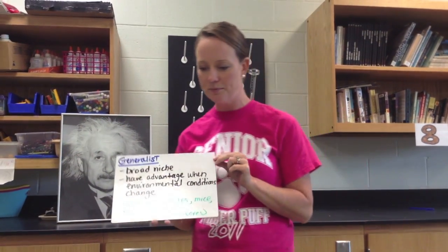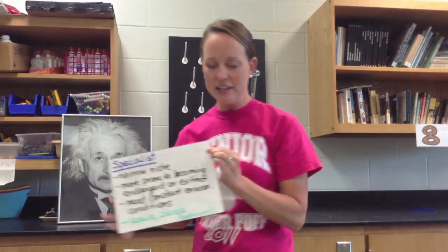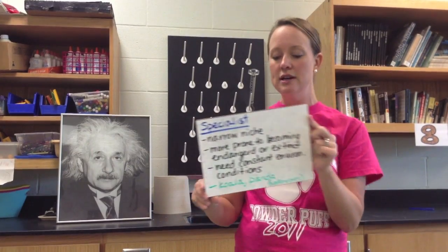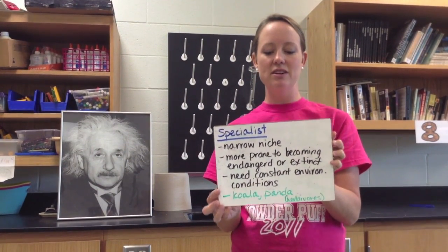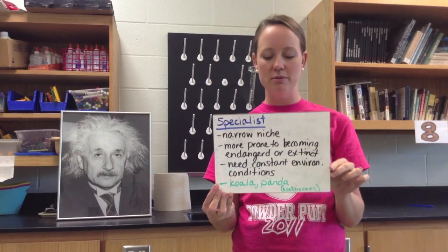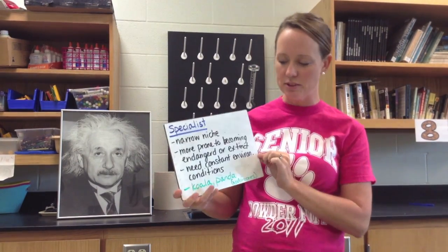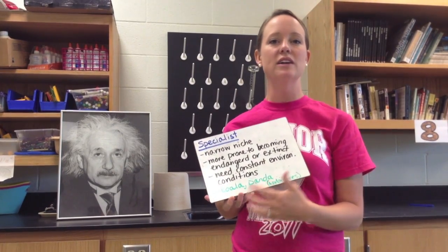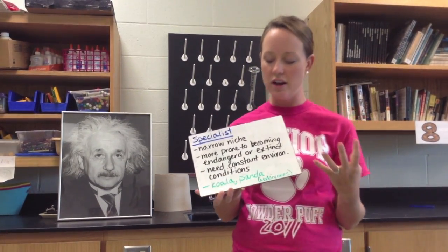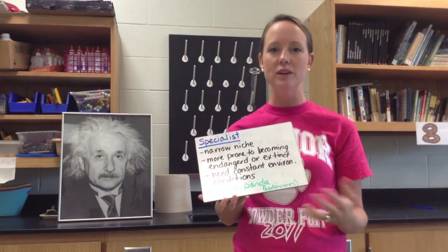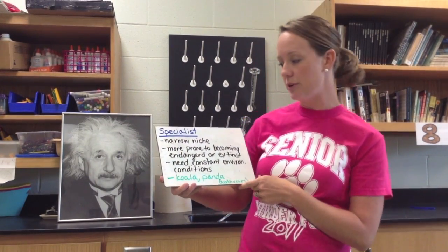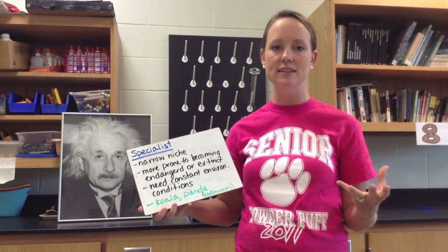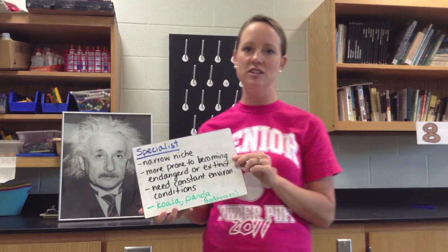If a species has a narrow niche, it is known as a specialist. They tend to live in only one type of habitat, have a narrow range of climate and other environmental conditions, and can only eat one or two types of foods. These are usually going to be herbivores. An example would be the koala, which can only eat eucalyptus. Same thing with a giant panda — they only eat bamboo. These are the types of organisms that are more prone to being endangered or becoming extinct, and they cannot adapt to changing environmental conditions.